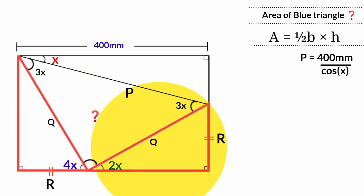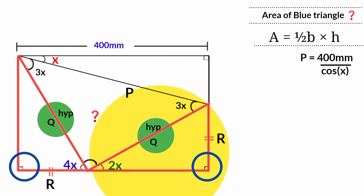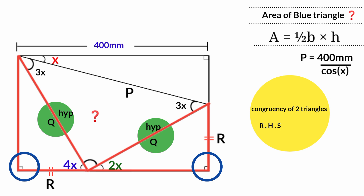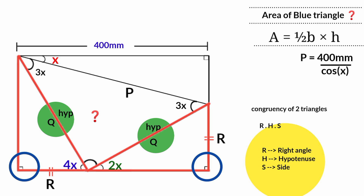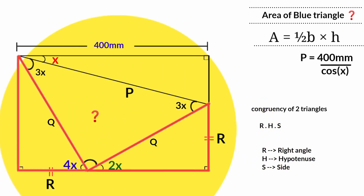Now look at these two triangles here — both are right-angled. They have the same hypotenuse length Q, and one of the other sides of each triangle is equal in length to the corresponding side of the other. This fulfills the RHS congruency criterion: R means both triangles have a right angle, H means both have the same hypotenuse length, and S means one other side is equal. This proves these two triangles are congruent, so all three corresponding sides are equal and all three corresponding angles are equal.